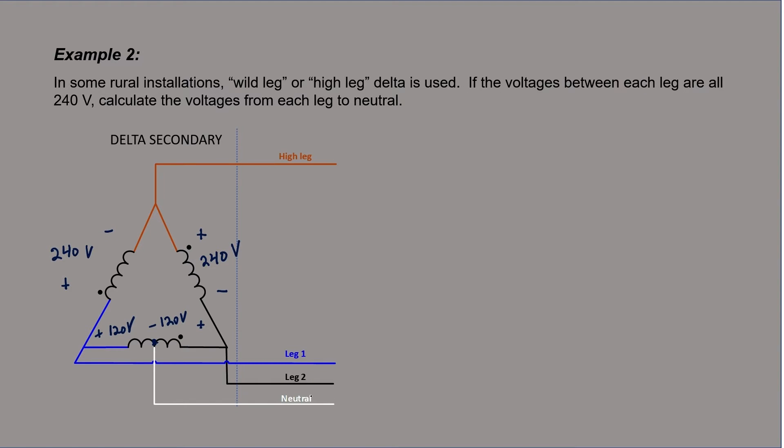In this diagram, the center tap becomes the neutral wire, and I've colored it white to match the typical color code used in North America. One of our phases is colored black, another phase is colored blue, and then our high leg, or the wild leg, is colored orange, and that's by convention.